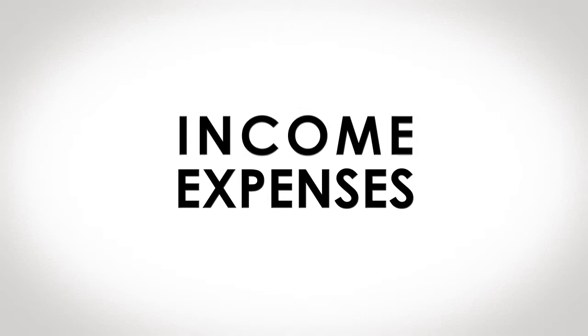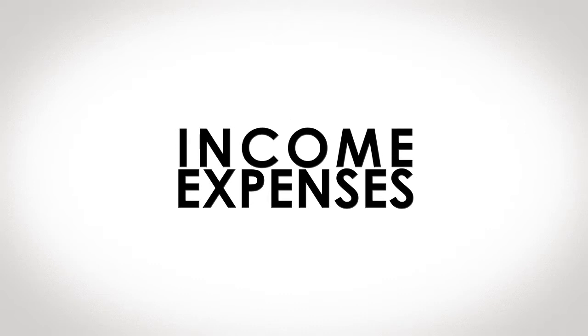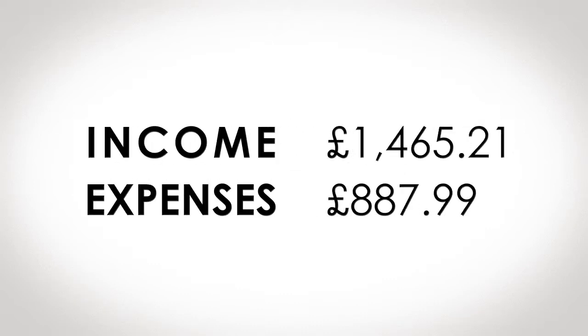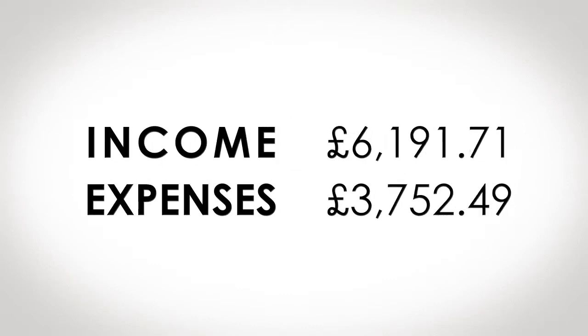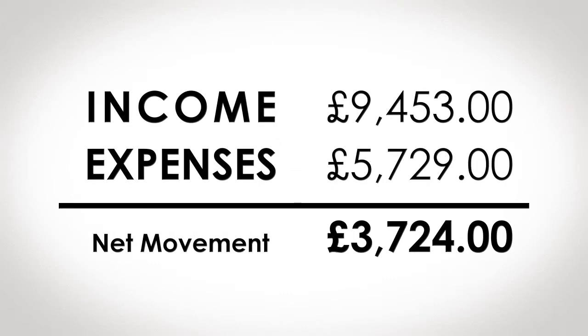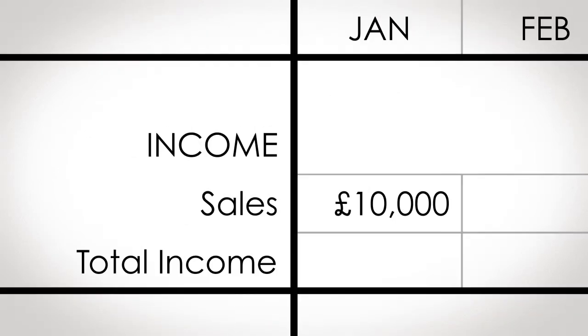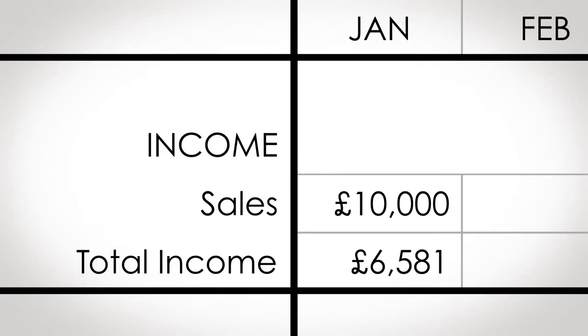The cash flow is split into two sections: income and expenses. Each section is then totaled at the bottom and the net movement is calculated. For instance, say you predict to pay ten thousand pounds into your bank in January — you would record that in the income section.